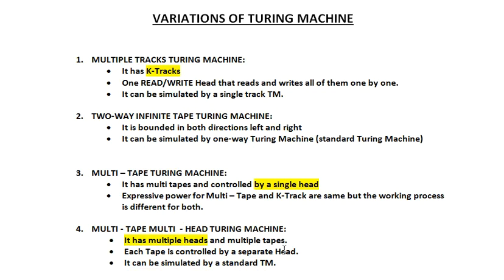We have covered almost seven to eight types of Turing machines including multiple tracks, multiple tape, multiple head, multi-tape multi-head, offline, and finally the Universal Turing Machine — the superset of all Turing machines. The next topic will be languages recognized by Turing machines. If you have suggestions or queries, comment below, hit the bell icon, and subscribe for updated videos.